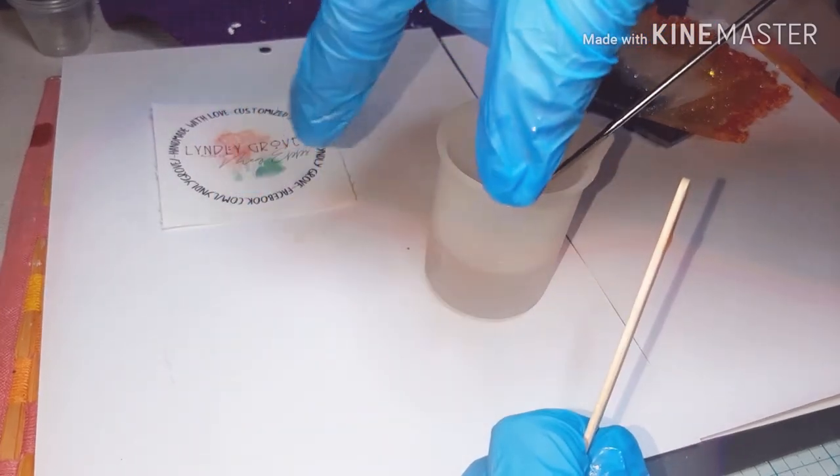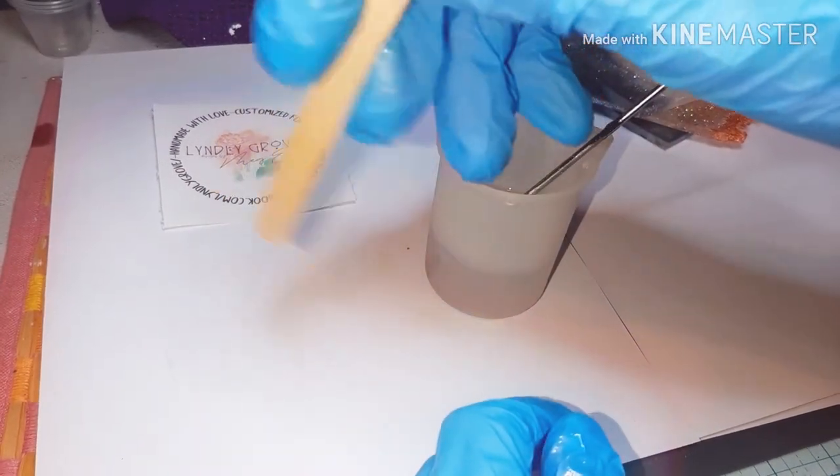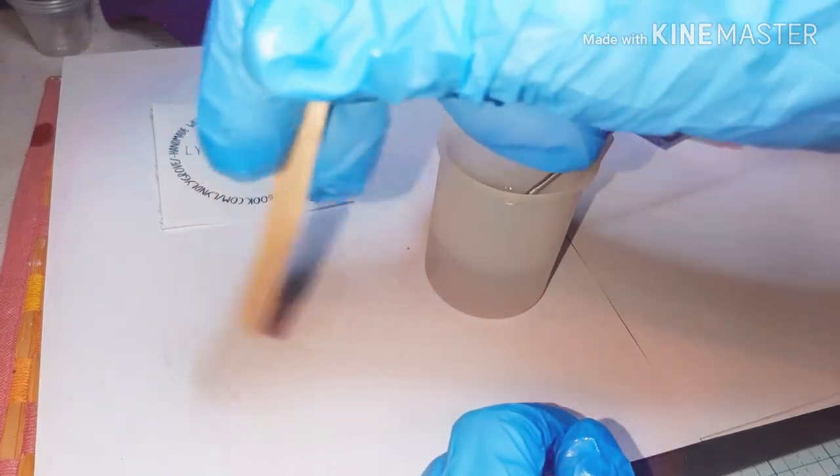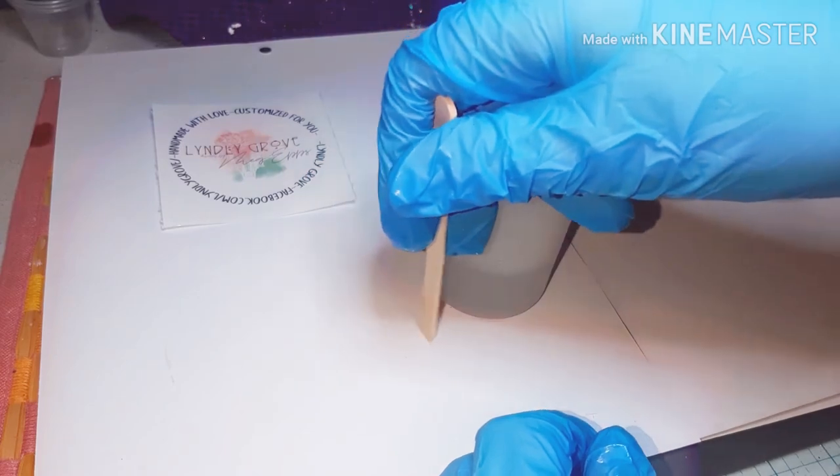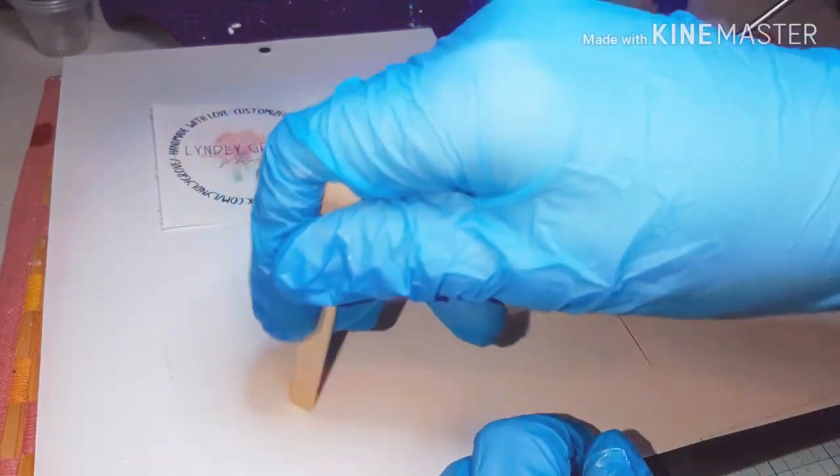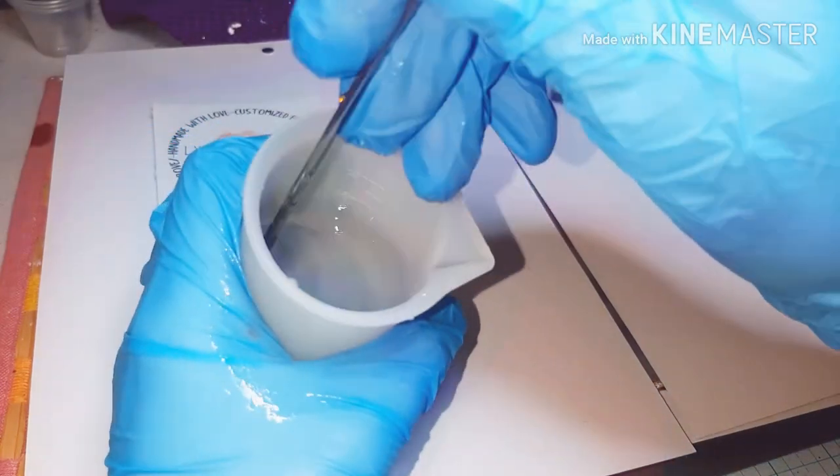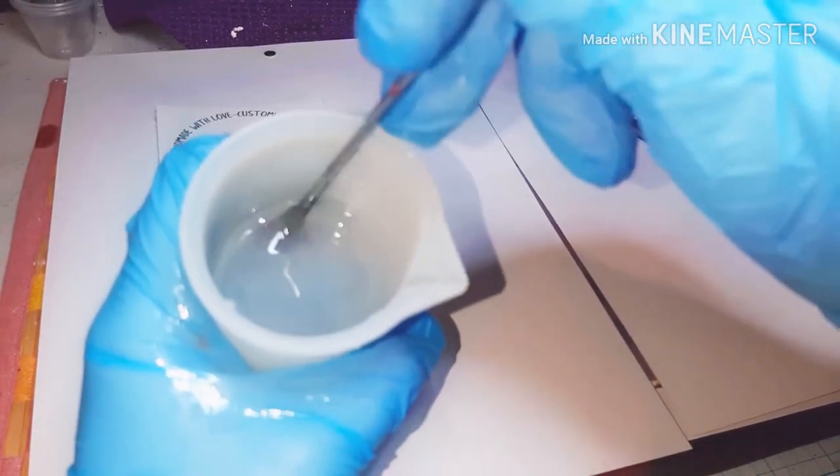Rather than a circular motion, I want to be making my stir stick go back and forth, just kind of moving it across the cup, back and forth, rather than going like this. I feel like it creates less bubbles. And that's just the way that I stir my epoxy.